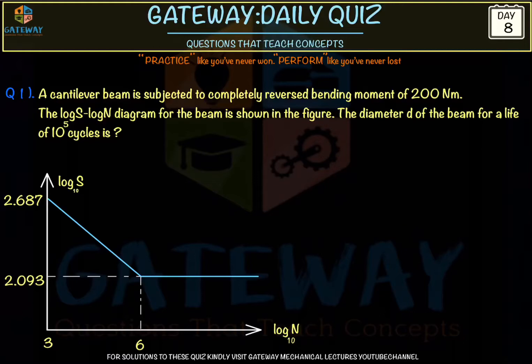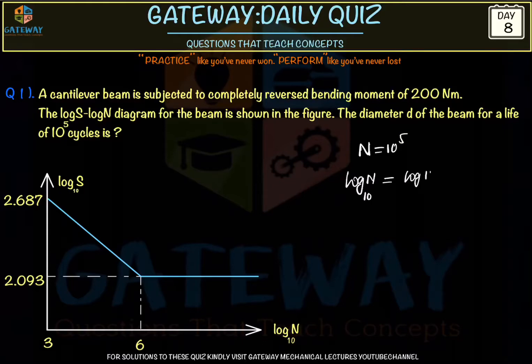We need to calculate the diameter at 10^5 cycles. When N = 10^5, log₁₀(N) = log₁₀(10^5) = 5·log₁₀(10) = 5. So we mark a point at 5 on the log N axis.